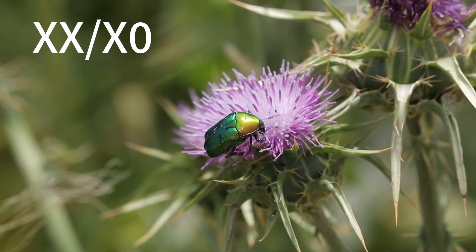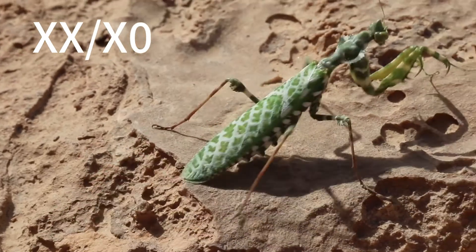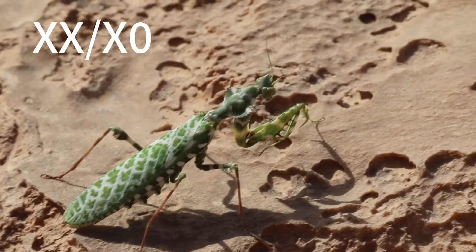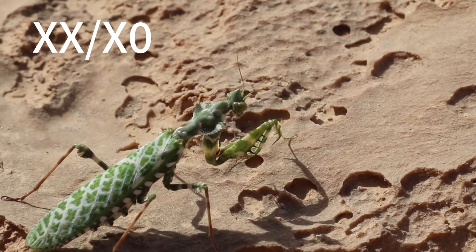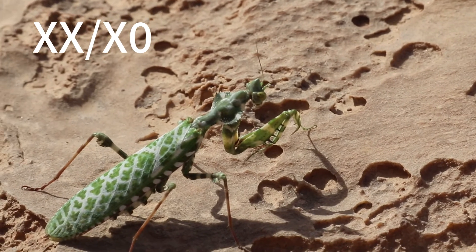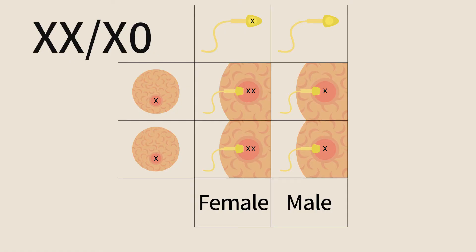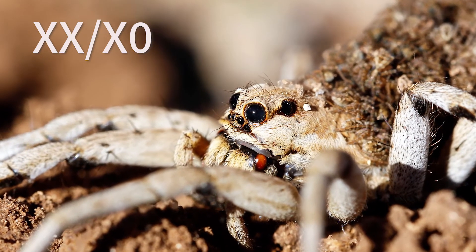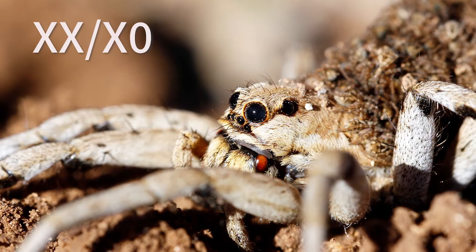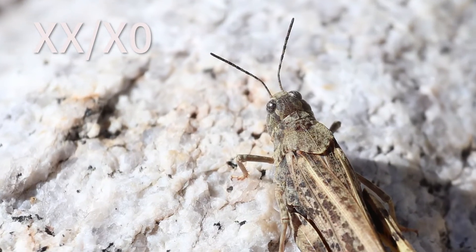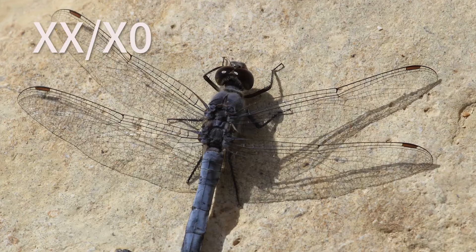In most beetles and flies, the sex determination mechanism is called XX/X0. In this mechanism, the sex is determined by the number of X chromosomes. An individual with one X chromosome is a male, and an individual with two is a female. This mechanism is widespread also in spiders, grasshoppers, cockroaches, dragonflies, and many other insects.